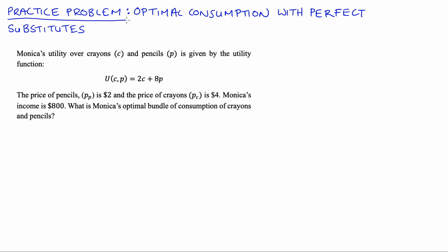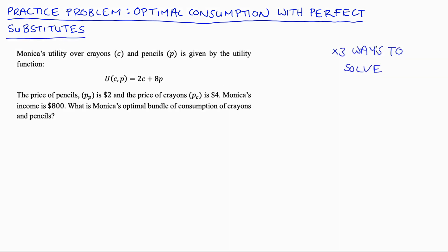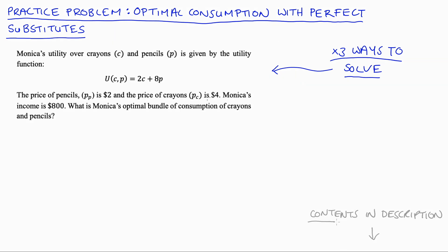Hi everyone. In this video I'm going to go through a practice problem that demonstrates how to find the optimal consumption bundle when we have perfect substitutes. I can actually think of three ways to solve questions like this, so it's a long video because I go through all three strategies. If you're in a rush, I'll put a note in the description which parts could make up a shorter version, and the contents listing those parts is in the description as well.